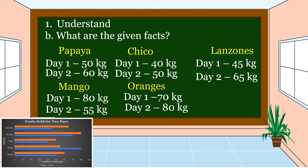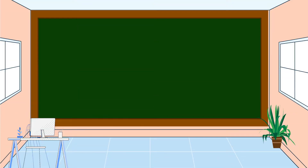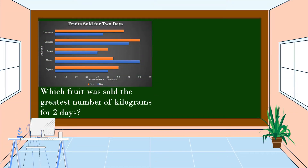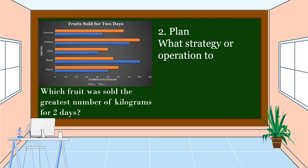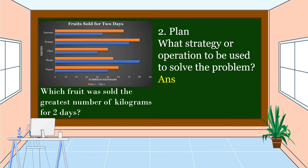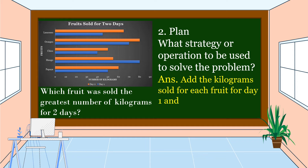We already understand the problem. The next step is we're going to make a plan — what strategy or operation should be used to solve the problem? We are going to add the kilograms sold for each fruit for Day 1 and Day 2.